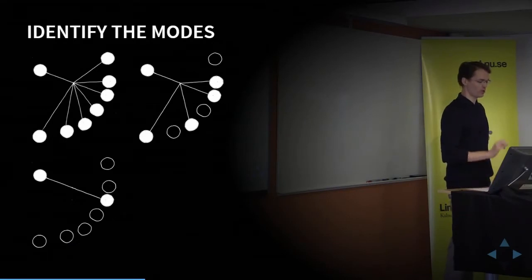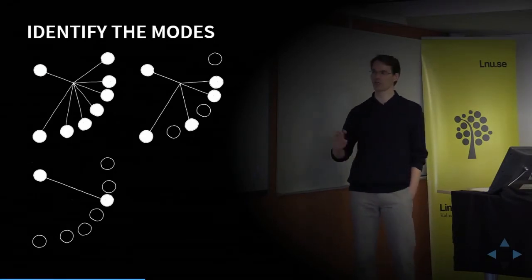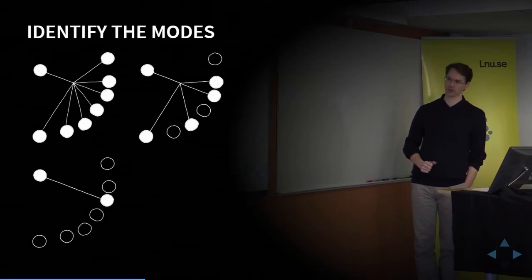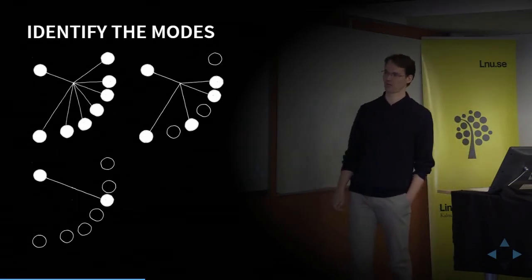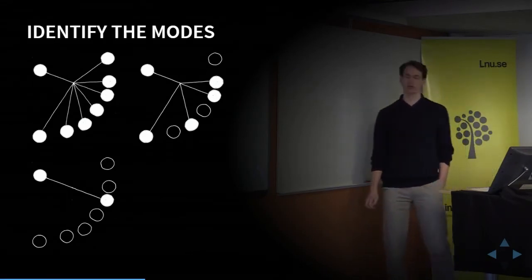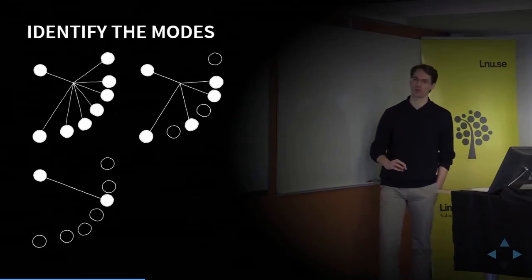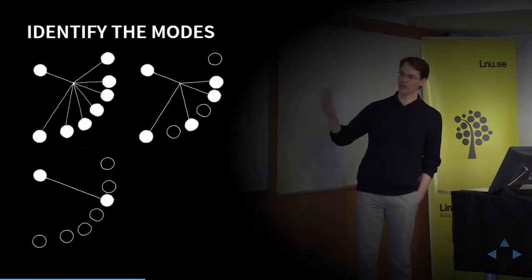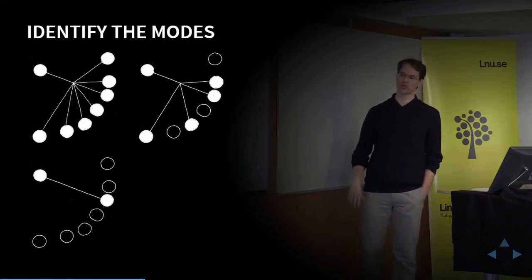There are three pictures illustrating these modes. Each circle is a node or computer, and white nodes receive or send the message. In the upper left, the message goes from one node to every other node — that's a broadcast message. In the upper right, the message goes to several but not every destination — that's multicast. And in the last one, the message goes to one destination — either unicast or anycast, but most likely unicast.